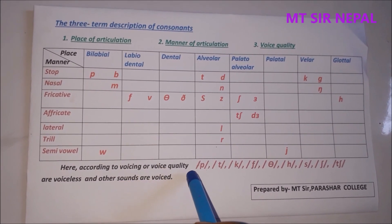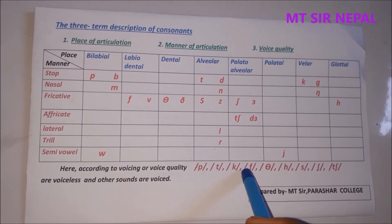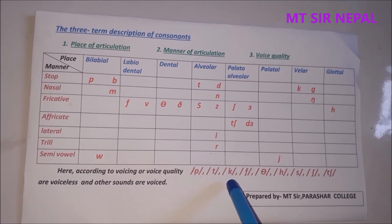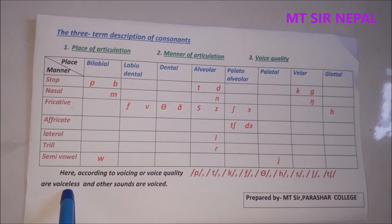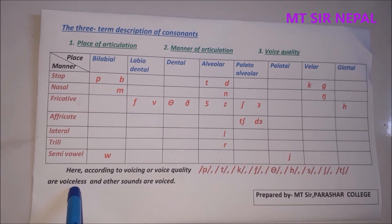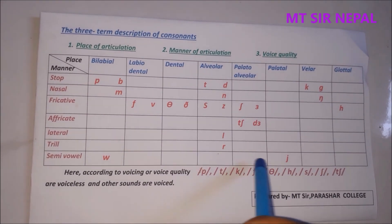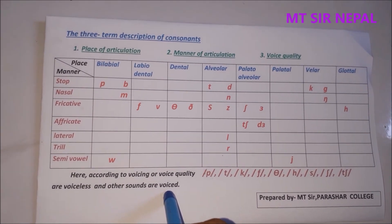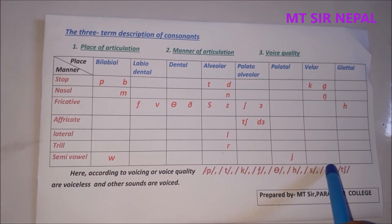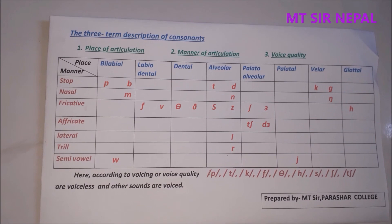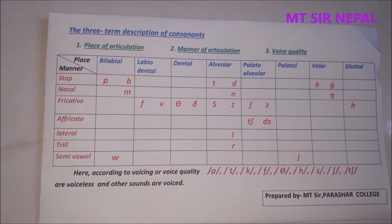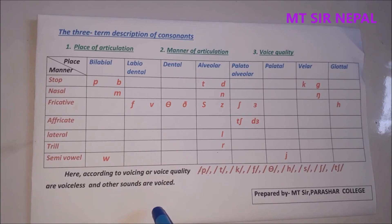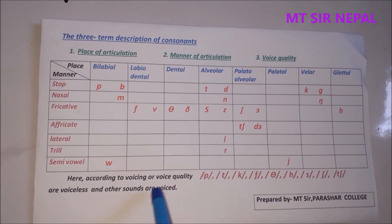According to voice quality, first we have to identify these nine voiceless sounds. Other sounds are voiced except these nine. To remember which sounds are voiceless, you can use the formula: 'potaka fatha hasha shacha.' According to this, we do the three-term description of all consonant sounds. The first criteria is voiceless or voiced.